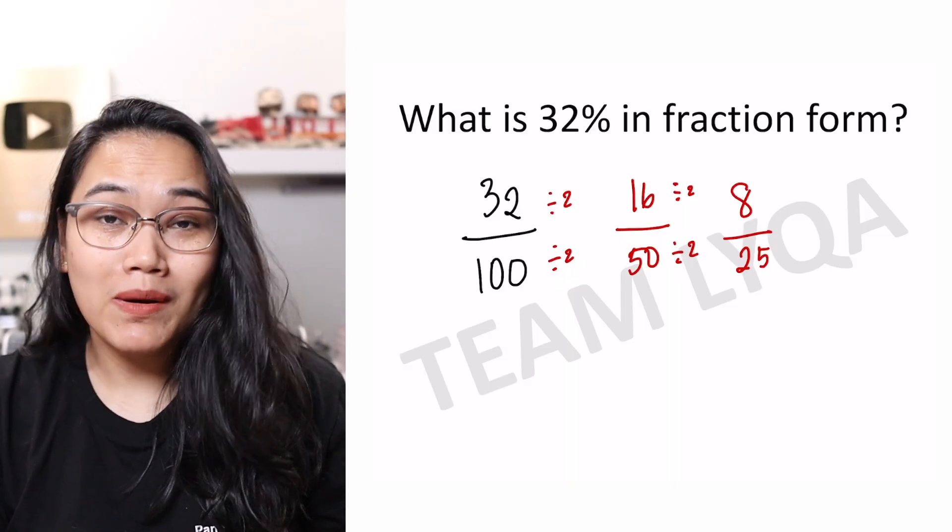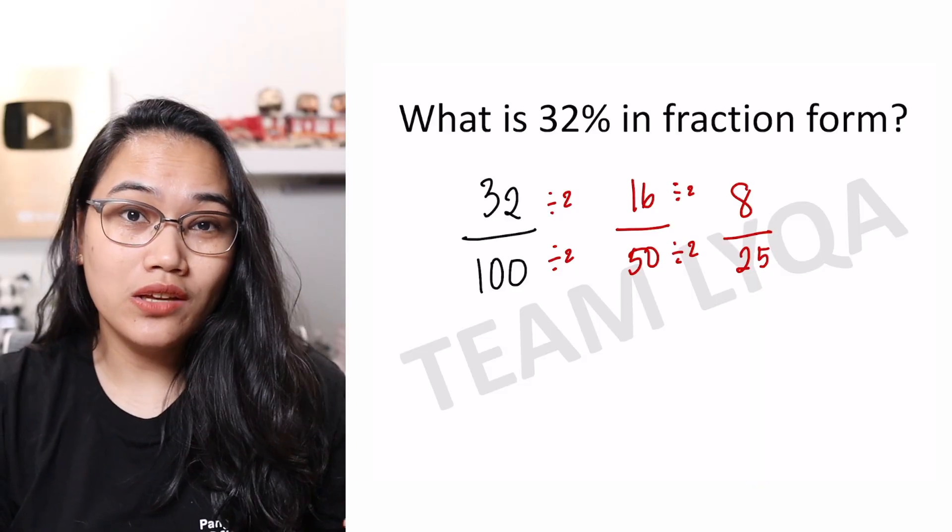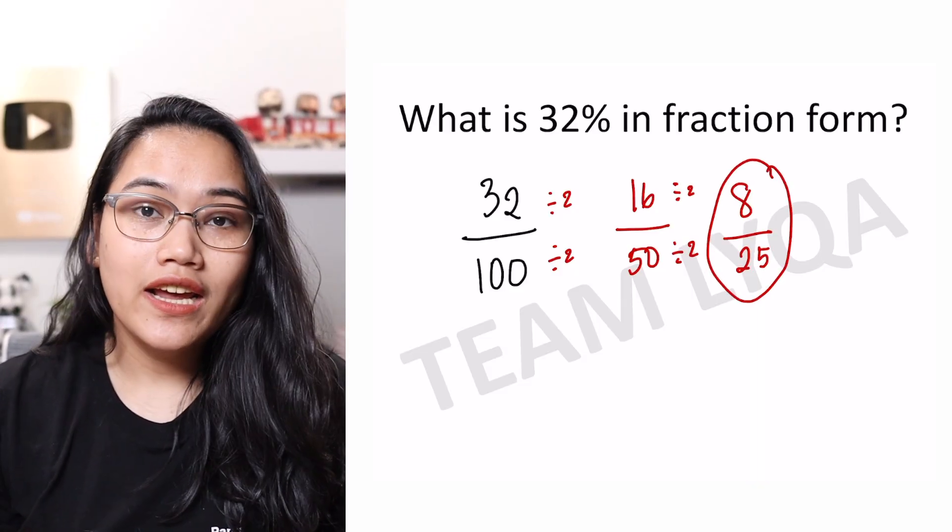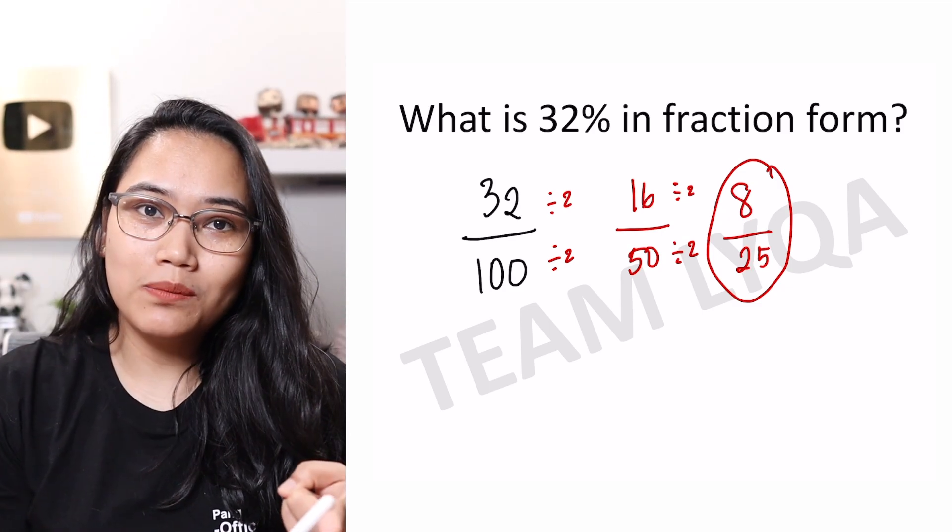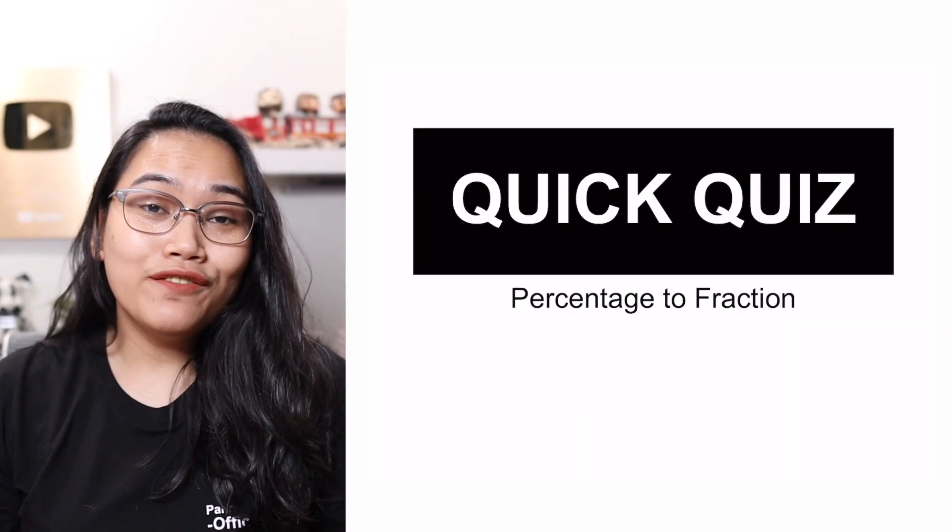Now, the question would be, can we do anything more there? 8 is still divisible by 2, but 25 is not. So we're done there. This becomes our final answer, 8 over 25. So again, two questions: What does percent mean? And is it in lowest terms? It's easy if you know what to do.